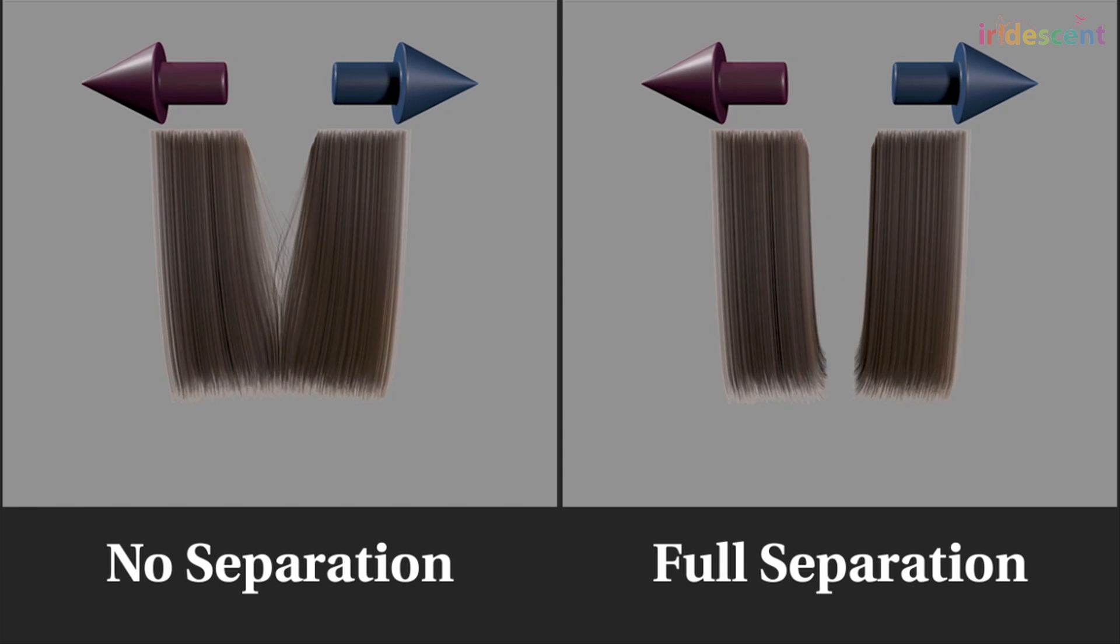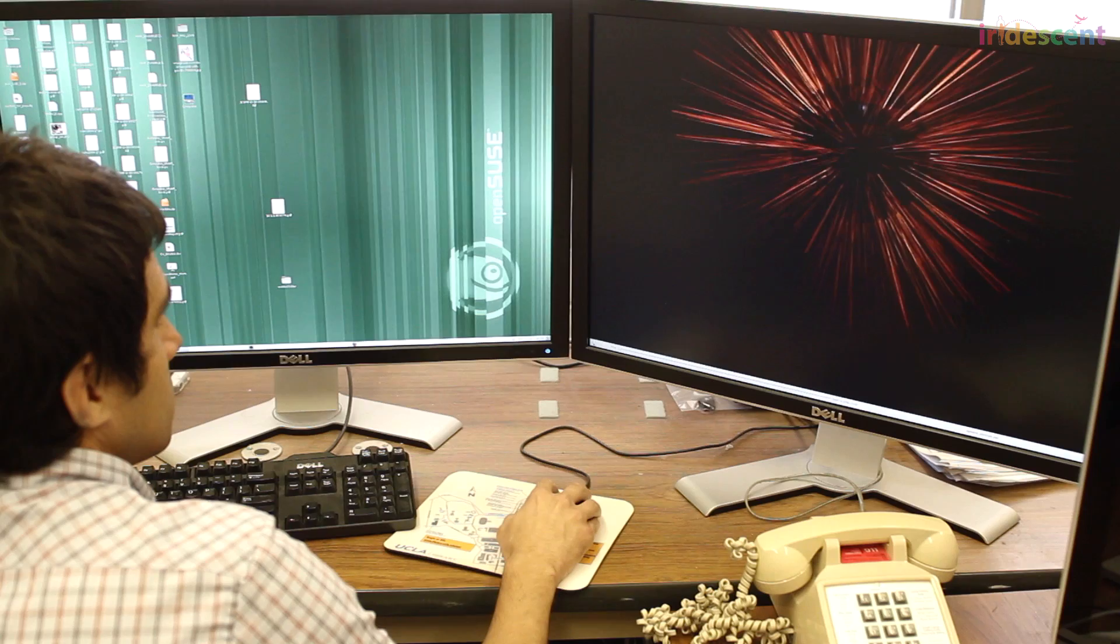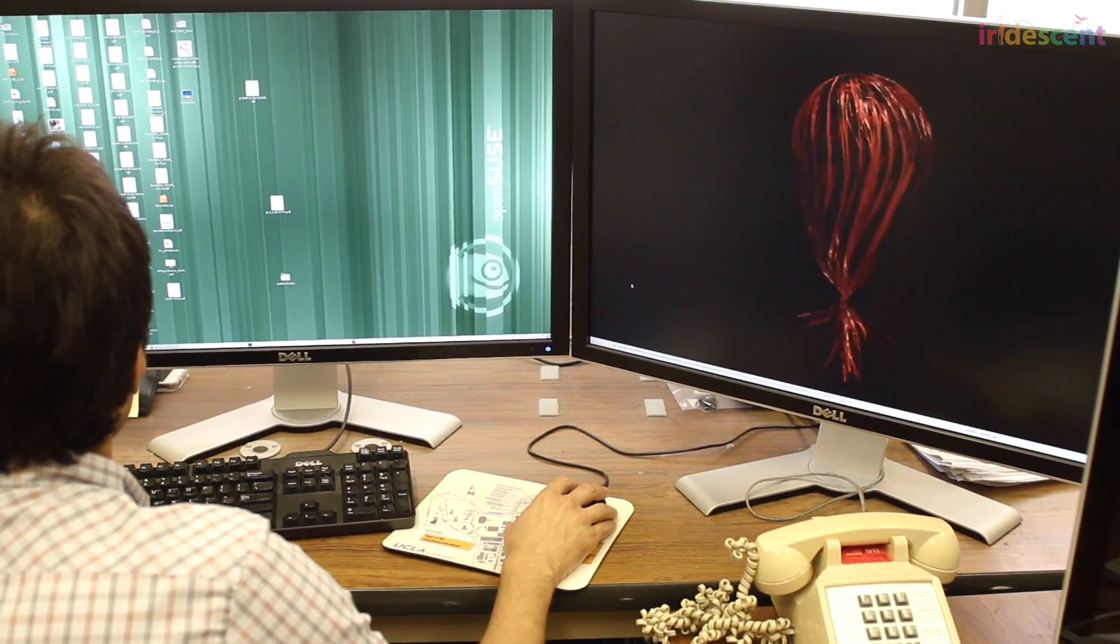But could you recreate our real and imperfect world in a computer? UCLA professor of applied mathematics Joseph Turan does just that.